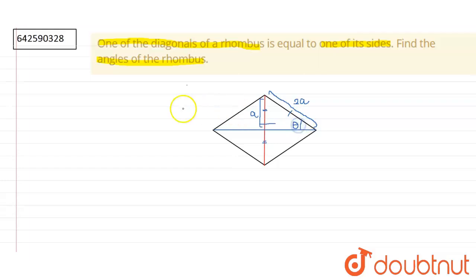If we find sine of theta, that is perpendicular over hypotenuse, here perpendicular is a and hypotenuse is 2a. a and a will cancel, we are left with 1/2, and we know that sine 30° equals 1/2.